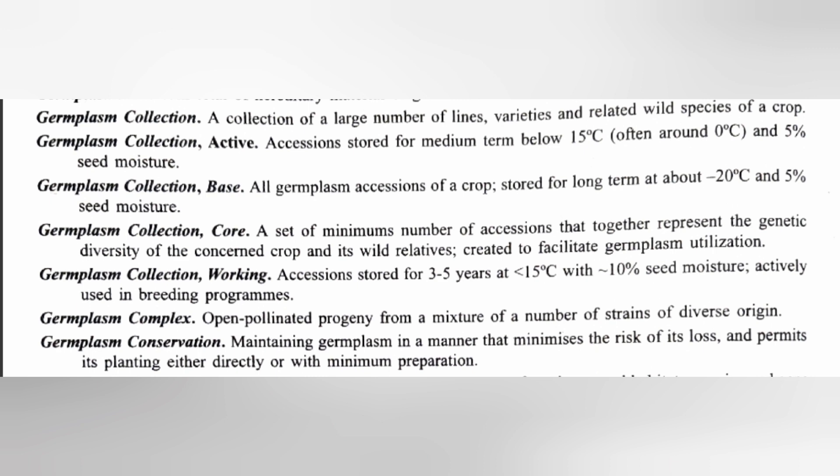Base collection is stored at about minus twenty degrees Celsius and five percent seed moisture. Comparing active and base: active is below 15 degrees, base is below minus twenty degrees. Seed moisture percentage is five percent in both.